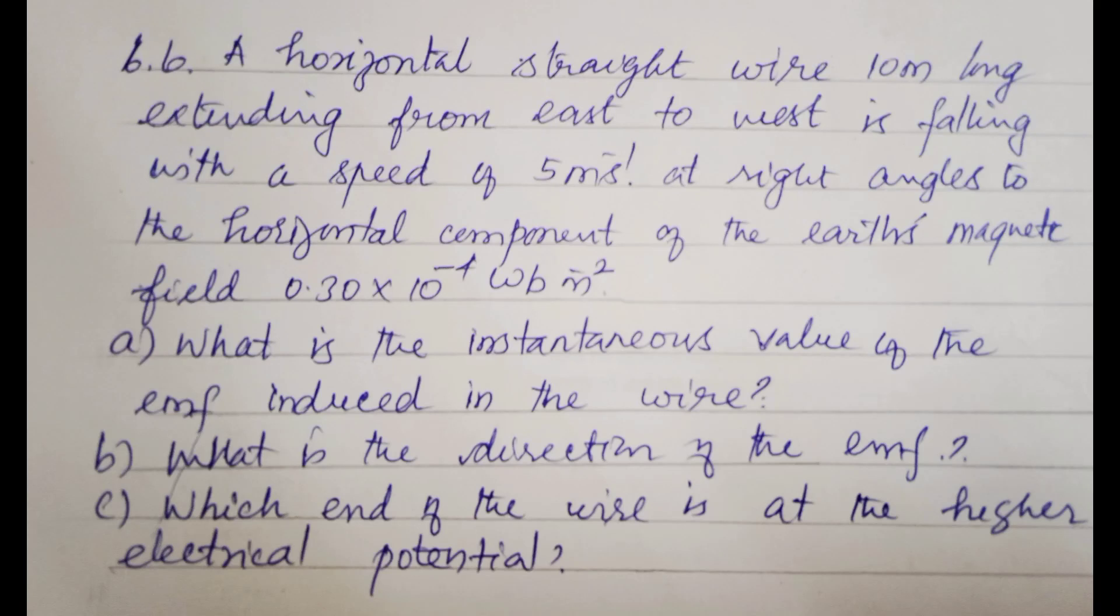A horizontal straight wire 10 meter long extending from east to west is falling with the speed of 5 meter per second at right angles to the horizontal component of the earth's magnetic field 0.3 into 10 power minus 4 Weber per meter square.